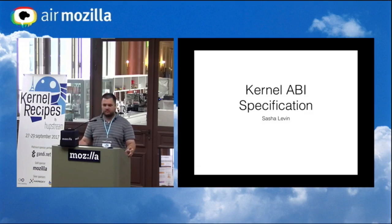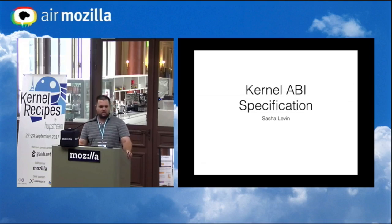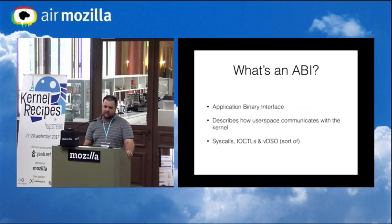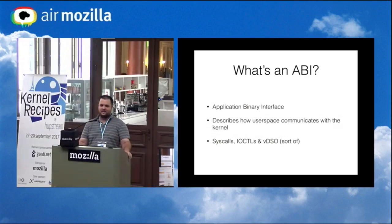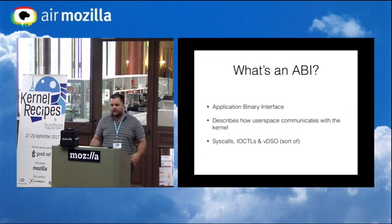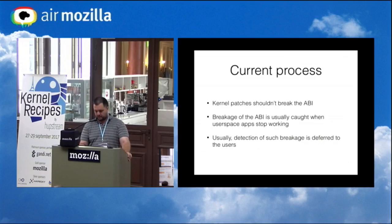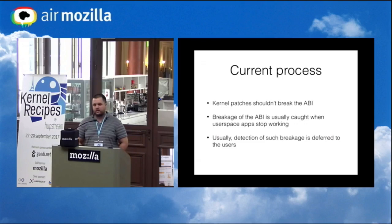Hi everyone. I'll talk about kernel ABI specification — how everyone wants one but how hard it is to get one. An ABI describes how two binary pieces of code communicate with each other. In our case, with the kernel, it describes how user space talks with the kernel — basically what we know as system calls, ioctls, and to some extent vDSO, which is also a way for user space to get into the kernel.